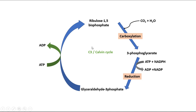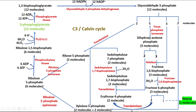Calvin cycle involves many biochemical reactions. In the detailed C3 or Calvin cycle, 6 molecules of ribulose-1,5-bisphosphate combine with 6 CO2 and water molecules in the presence of RuBisCO enzyme and produce 12 molecules of 3-phosphoglycerate. These react with 12 ATP molecules and form 12 molecules of 1,3-bisphosphoglycerate via phosphoglycerate kinase enzyme. These are then reduced to 12 molecules of glyceraldehyde-3-phosphate by 12 NADPH molecules in the presence of glyceraldehyde-3-phosphate dehydrogenase.